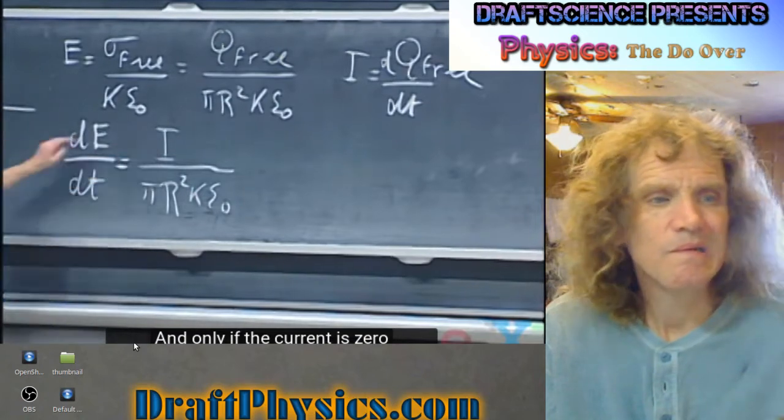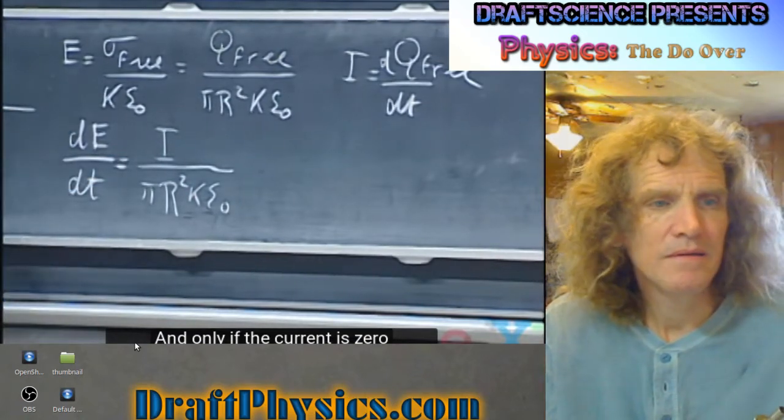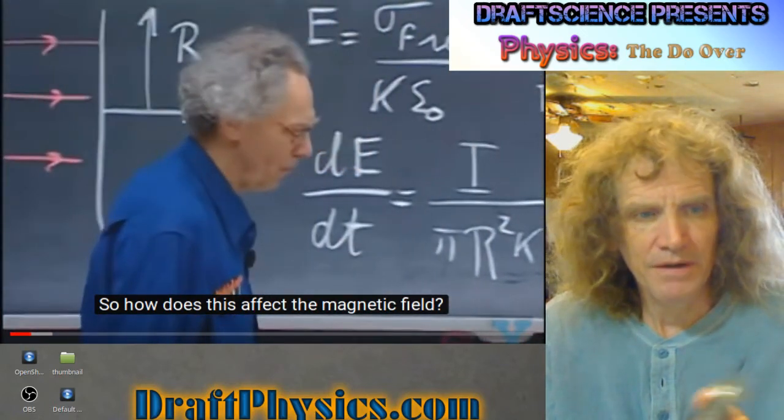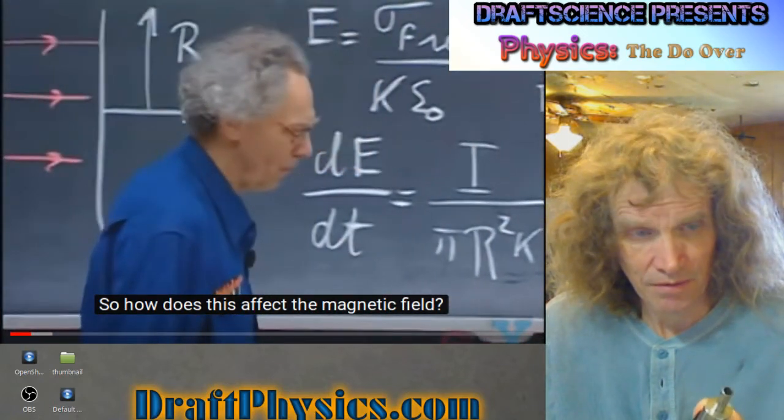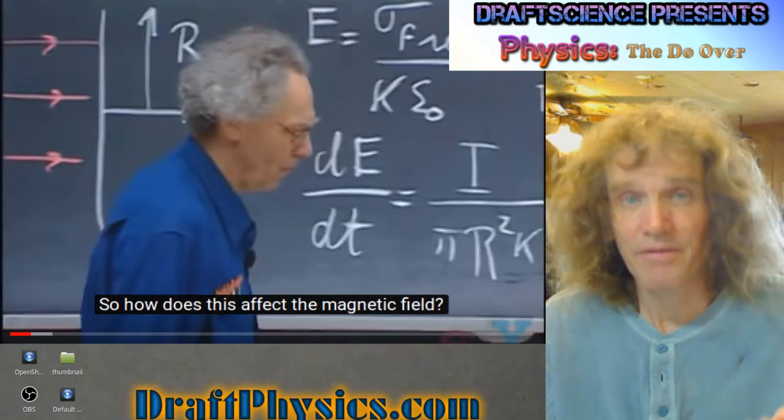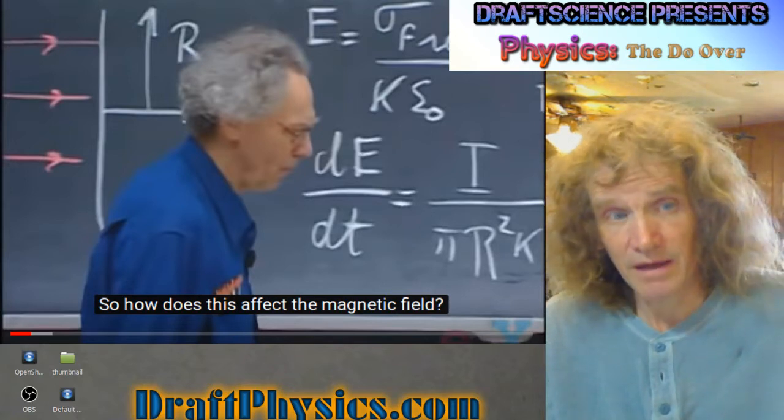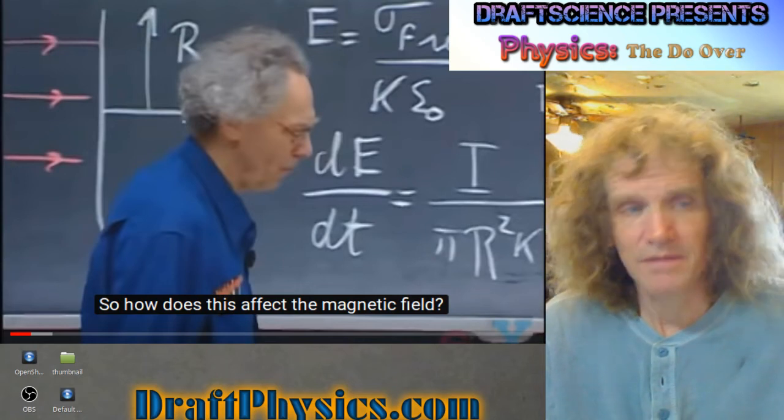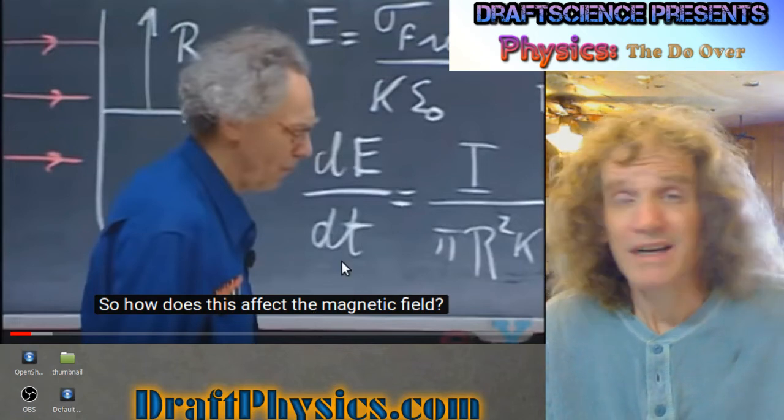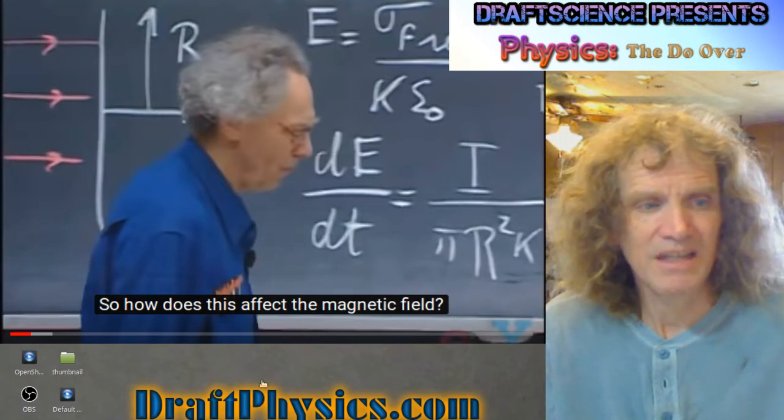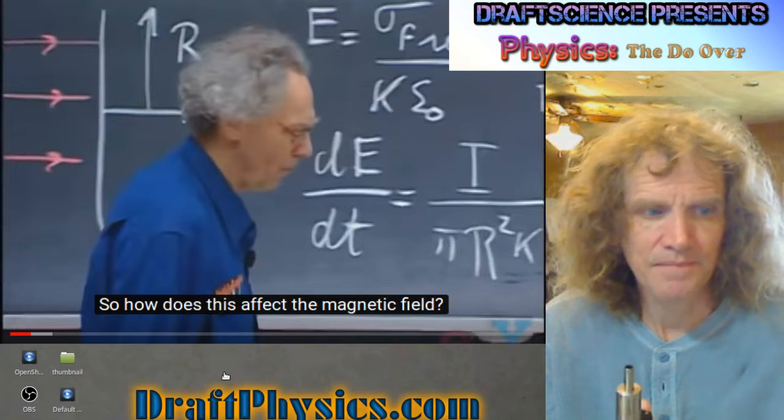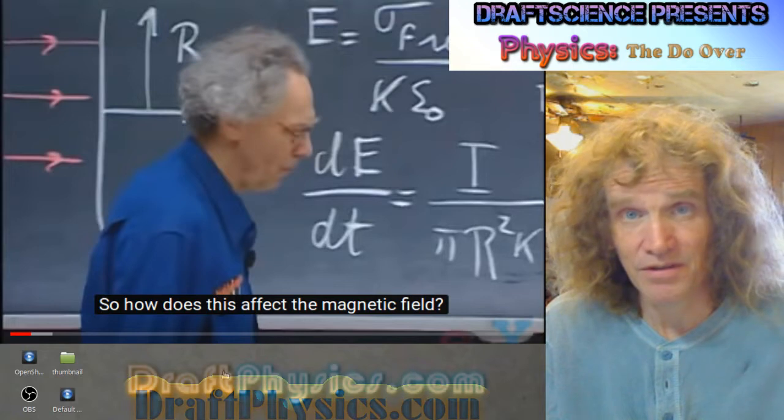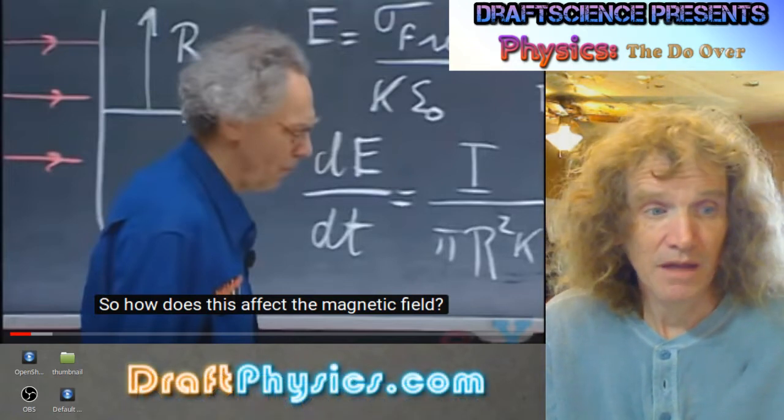And only if the current is zero, is there no changing electric field inside. The other thing to keep in mind, this epsilon zero thing, combined with the mu zero thing, ends up being the speed of light. So it's that constant is in there, sort of indicating as a speed element to how quickly things happen.